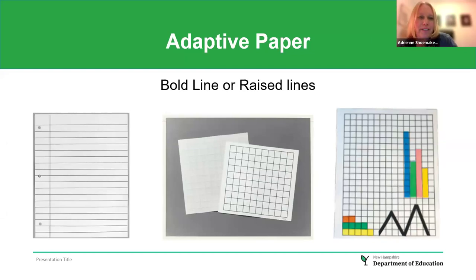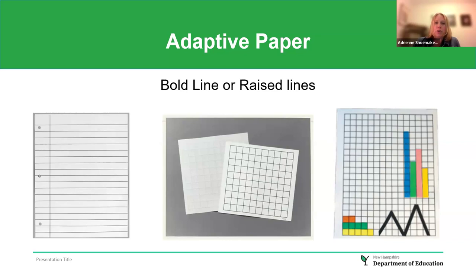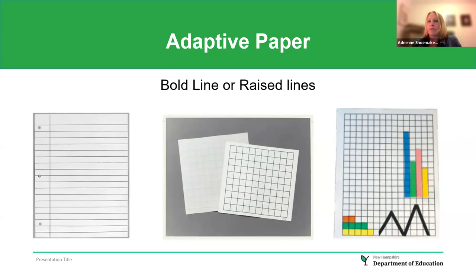Starting with some low-tech materials: adaptive paper. All of these papers are from the American Printing House for the Blind. First is bold line writing paper. The second shows bold line graph paper and raised line graph paper. Students with no vision would benefit from the raised line graph paper, and students whose vision is bothered by many lines can also benefit. Tactile materials like sticky back foam and art tape can be used to make graphs tactile.